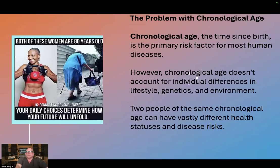The problem with chronological age. Chronological age — the time since birth — is the primary risk factor for most human diseases. However, chronological age doesn't account for individual differences in lifestyle, genetics and environment. Two people of the same chronological age can have vastly different health statuses and disease risks.